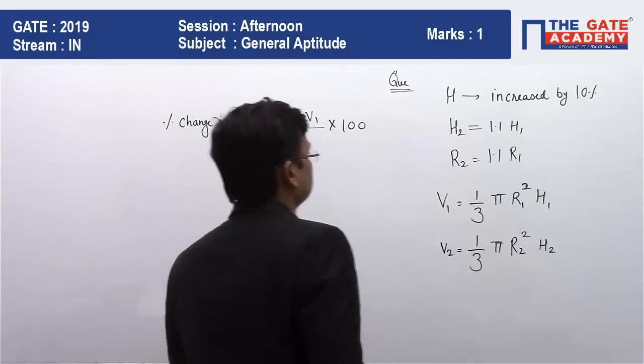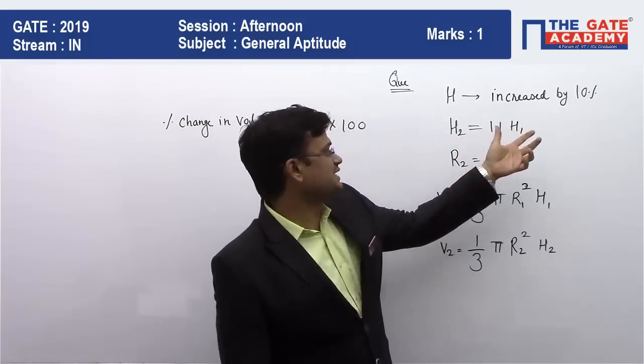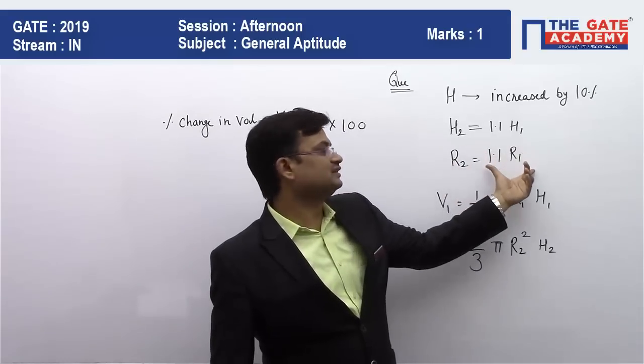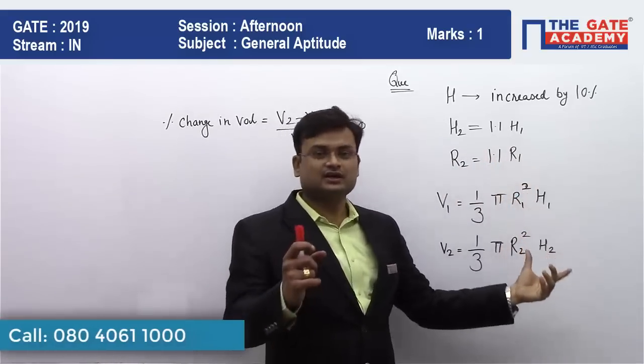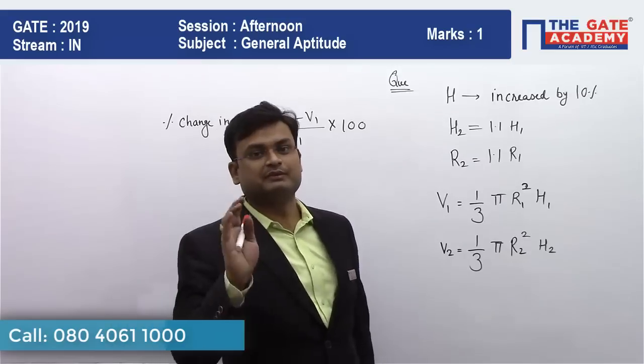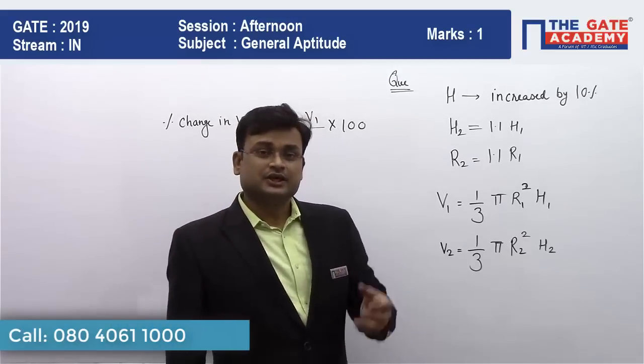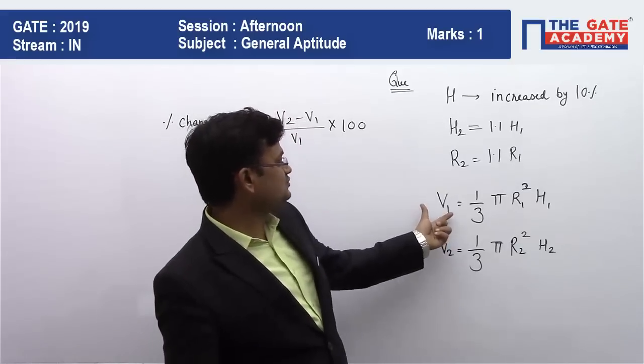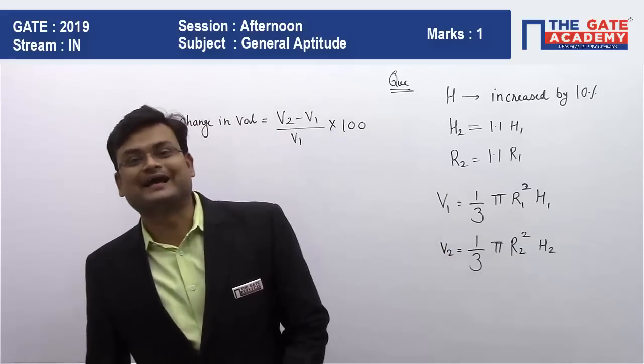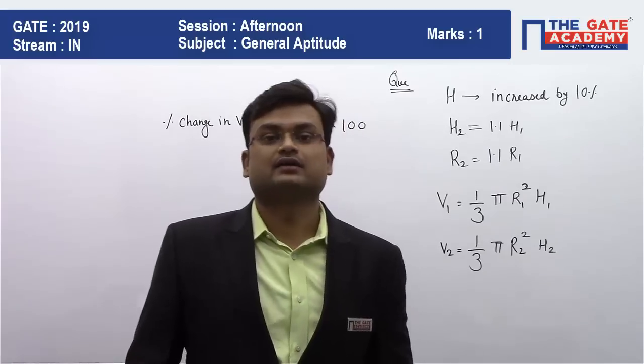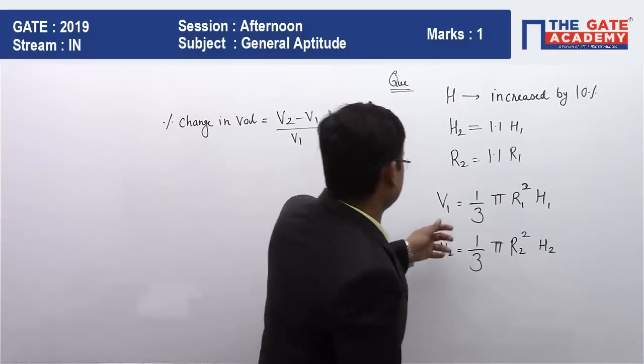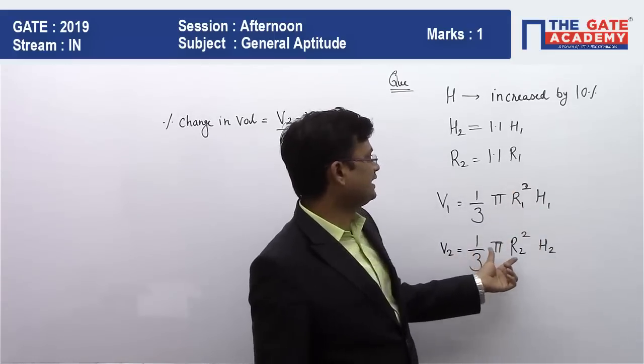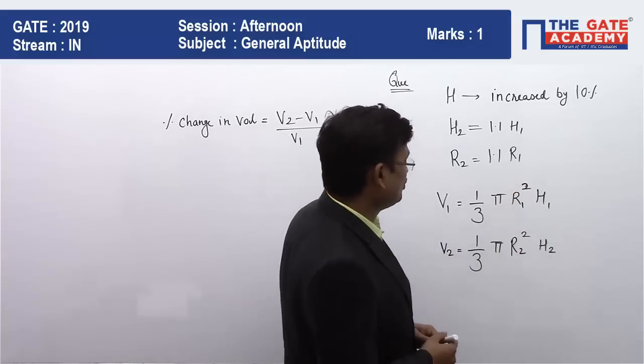So H2 is 10% increase of H1, R2 is also 10% increase of R1. Now I am sure that you remember the formula because you have studied this formula in your school. The formula is: volume is equal to 1/3 π r² h. So V1 = 1/3 π r1² h1 and V2 = 1/3 π r2² h2.